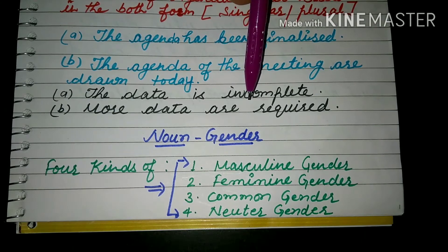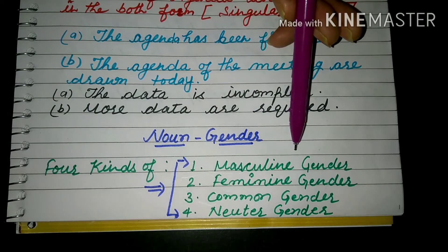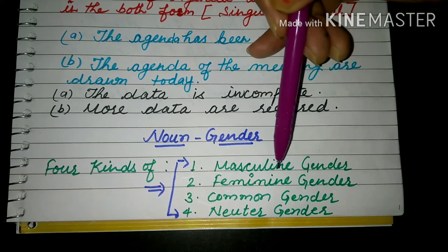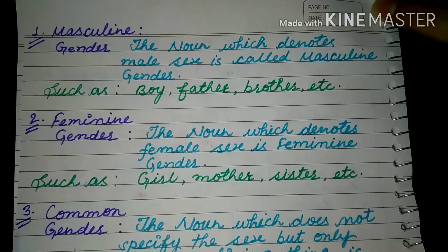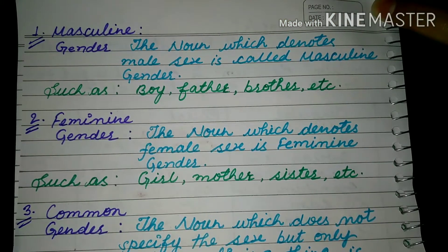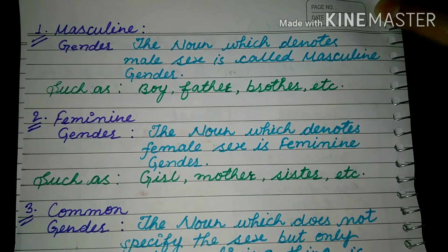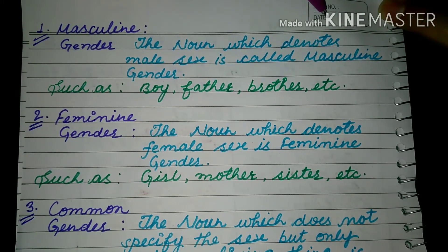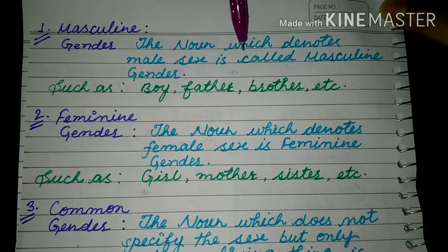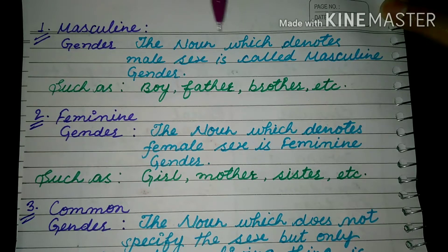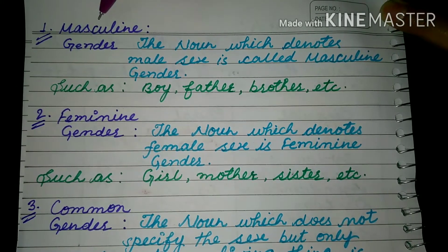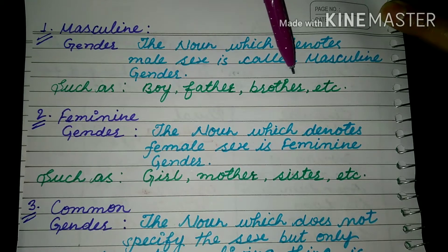Our number topic is completed. Now we have to revise our gender. There are four kinds of gender: masculine gender, feminine gender, common gender, and neuter gender. Masculine gender means the noun which denotes male sex — nouns that refer to male, such as boy, father, brother, etc.